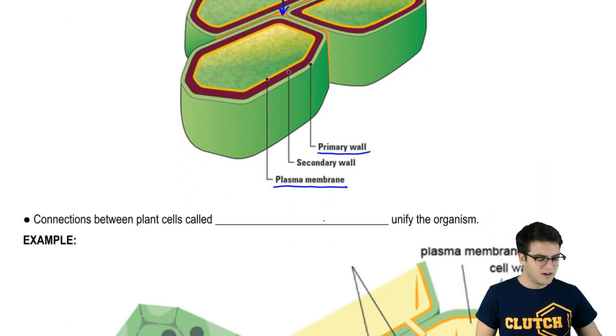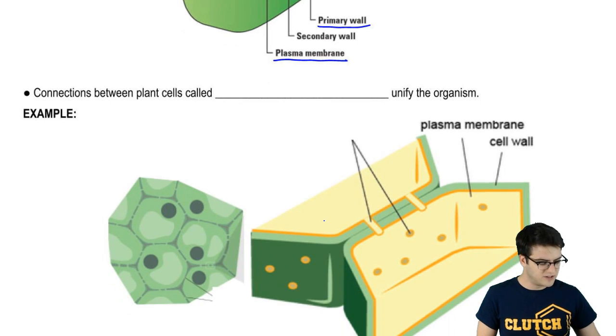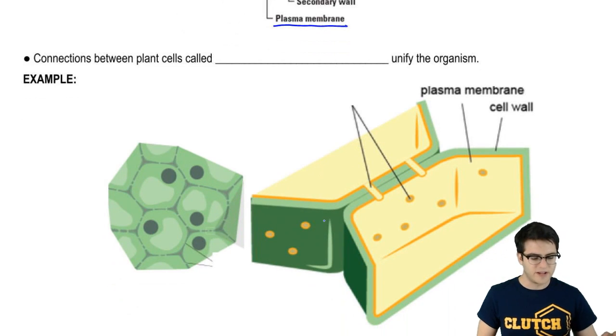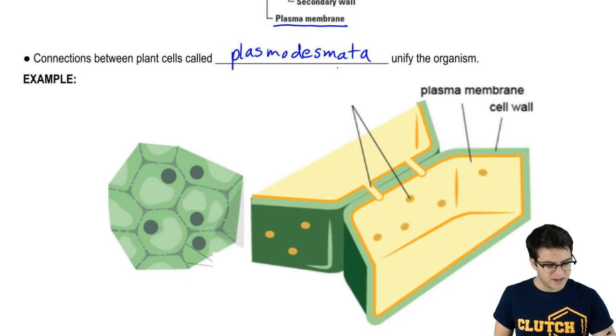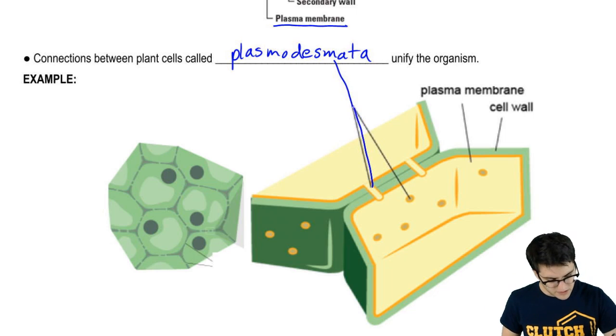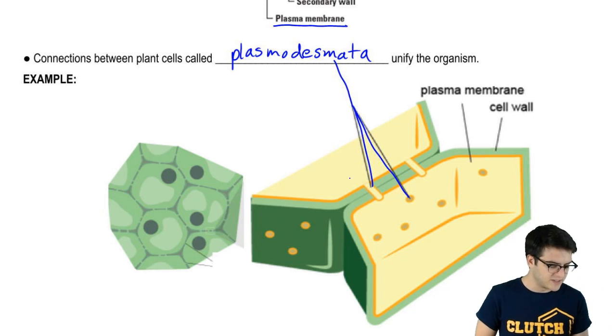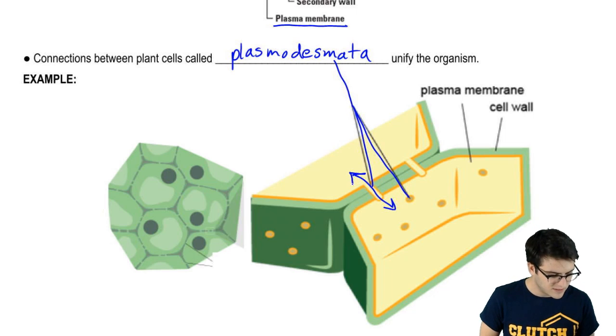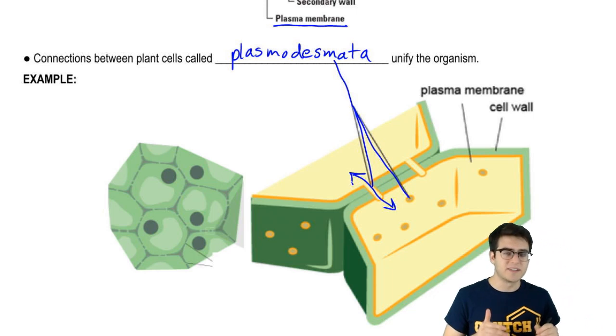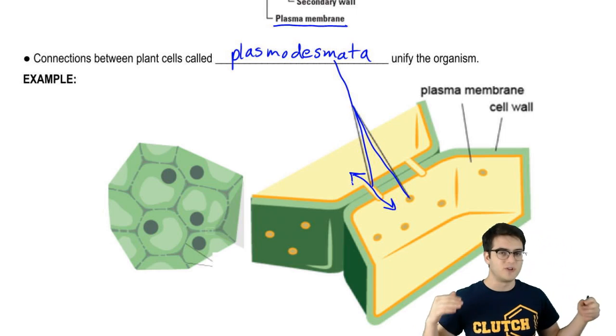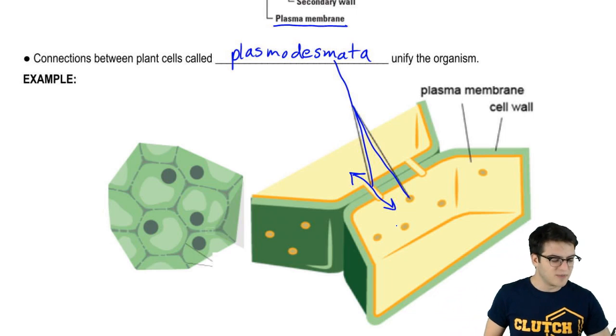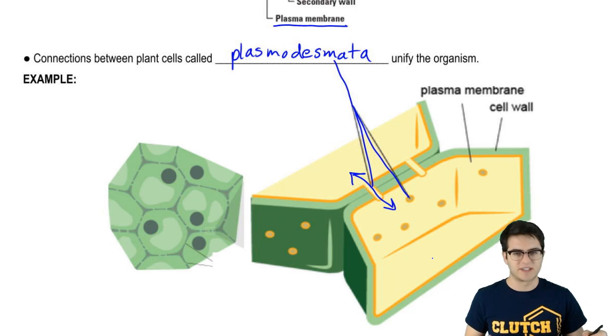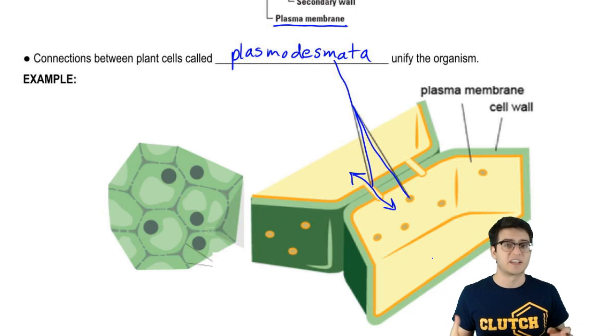Now, plant cells are also connected to each other by little pathways that we call plasmodesmata. And these plasmodesmata are literally just pores between plant cells that allow the passage of materials between the cells. Now this means that the cytoplasm of two plant cells joined by plasmodesmata is continuous. There's no barrier there. So the cytoplasm of one cell flows seamlessly into the cytoplasm of its neighboring cell that it's connected to.